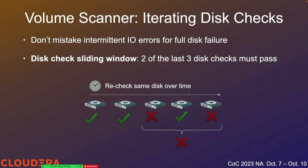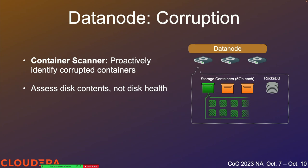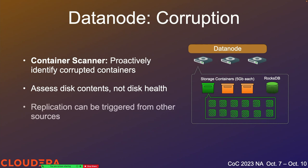Next let's look at the container scanners. The disk scanners check overall volume health but haven't actually looked at the data byte by byte to see if it's all there and consistent. For this we have the container scanners, which actually go through the content of all the containers — every block — and look at checksums and the RocksDB metadata. Eventually this touches all of the data on the disk. If a failure is found, we can trigger replication from another healthy source.